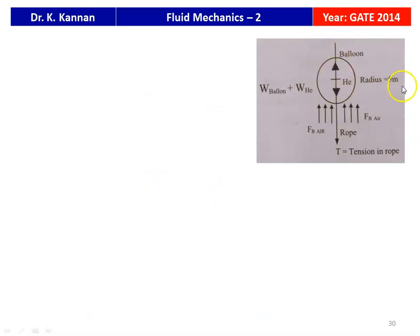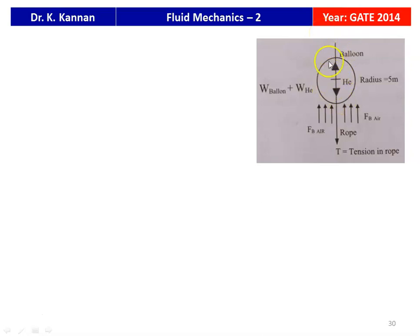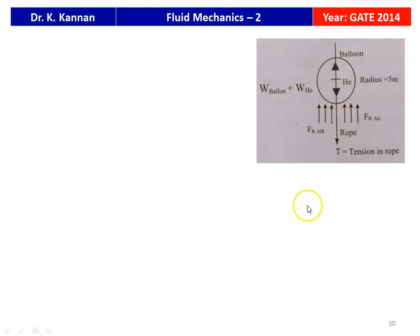This is the balloon of radius 5 meters, filled with helium. The total weight of the balloon is the weight of the balloon material plus the weight of the helium. The balloon is subjected to an upward force because of the helium and a downward force due to the rope. The tension in the rope gives the downward force. When the upward force and the downward force are equal, the balloon stays at a particular location.